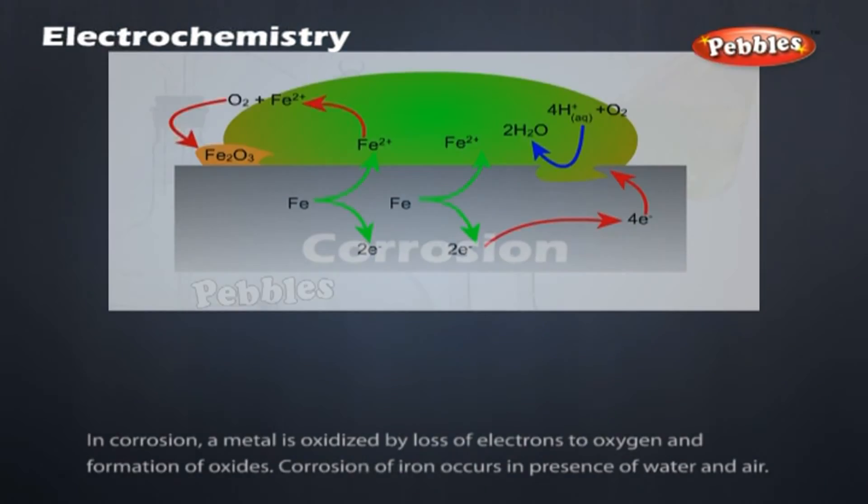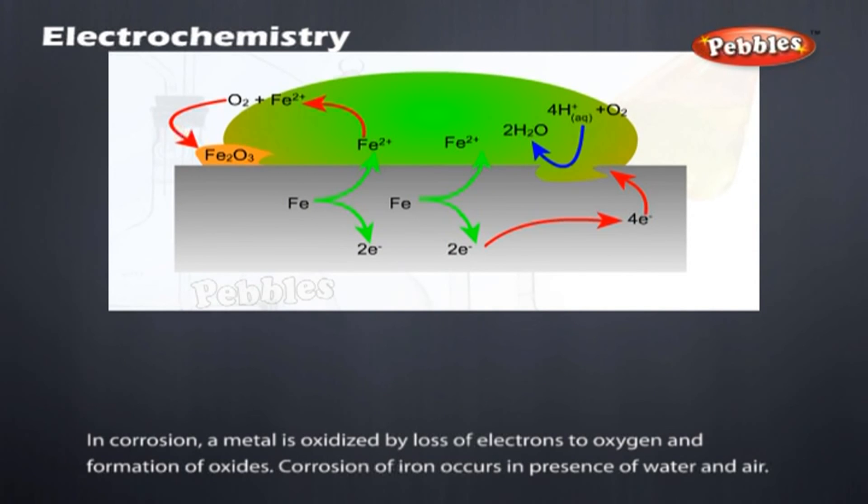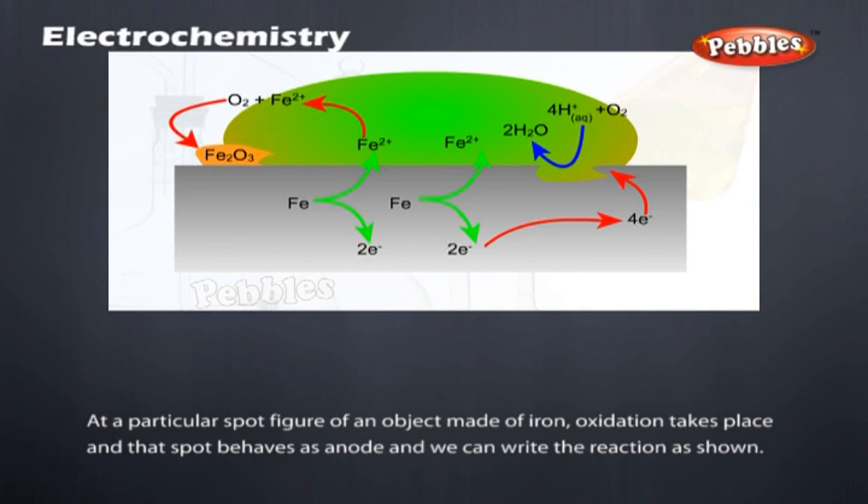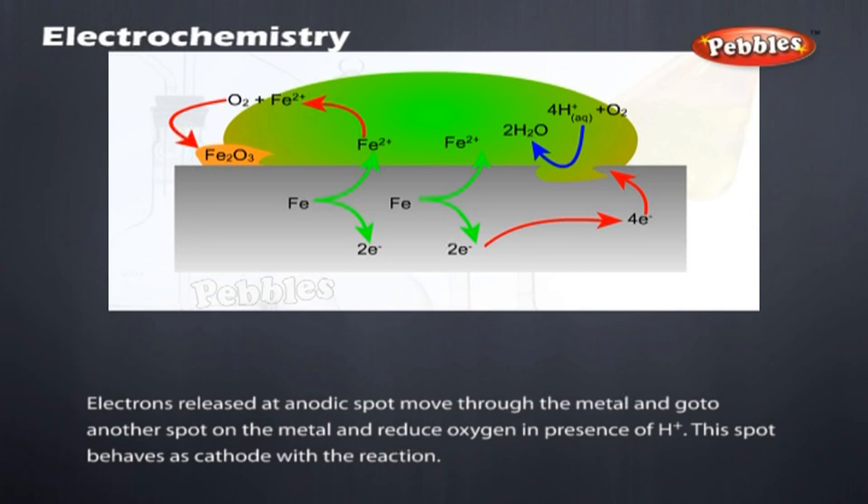Corrosion. In corrosion, a metal is oxidized by loss of electrons to oxygen and formation of oxides. Corrosion of iron occurs in presence of water and air. At a particular spot on an object made of iron, oxidation takes place and that spot behaves as anode and we can write the reaction as shown. Electrons released at anodic spot move through the metal and go to another spot on the metal and reduce oxygen in presence of H+. This spot behaves as cathode with the reaction shown.